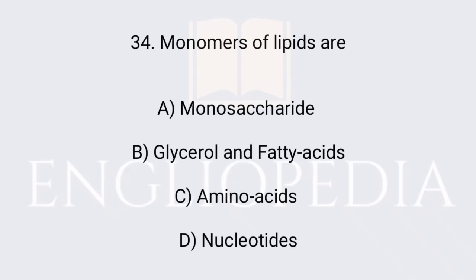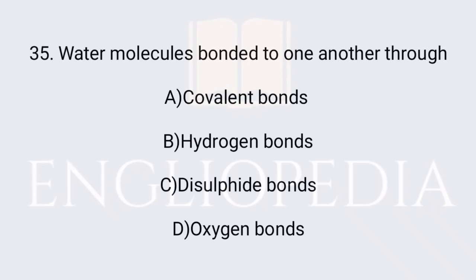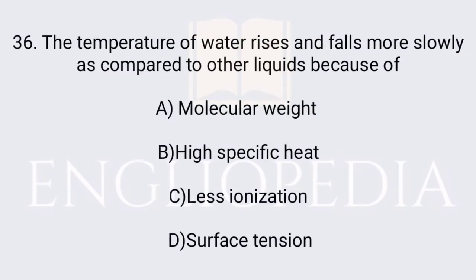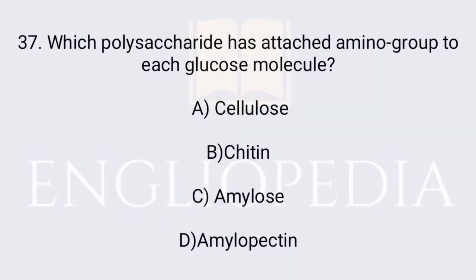Monomers of lipids are glycerol and fatty acids. Water molecules are bonded to one another through hydrogen bonds. The temperature of water rises and falls more slowly as compared to other liquids because of its high specific heat. Which polysaccharide has an attached amino group to each glucose molecule? Chitin has an attached amino group to each glucose molecule.